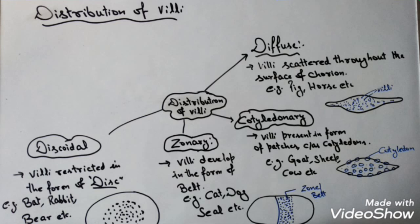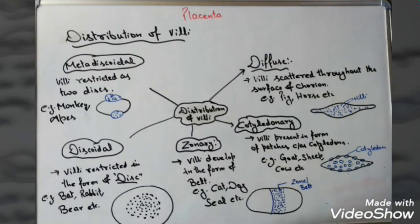The last type based on distribution of villi is metadiscoidal type of placenta. Here the villi are arranged in the form of a disc, however the number of discs is always more than one. As shown in the figure, there are two disc-like structures on the placenta. Such type is found in monkey and apes. To summarize: diffuse — villi distributed throughout; cotyledon — villi in patches; zonary — villi in belt form; discoidal — one disc; metadiscoidal — more than one disc.